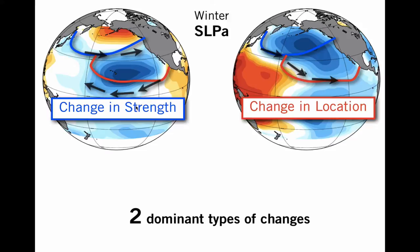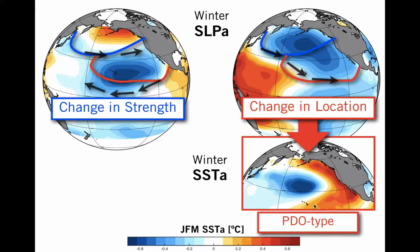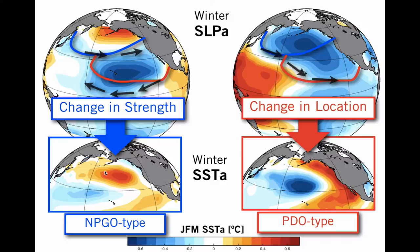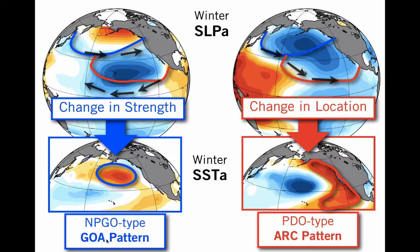In particular, the change in location typically drives the so-called PDO, or Pacific Decadal Oscillation type pattern, which is shown here in sea surface temperature anomalies. The change in strength typically drives a pattern more reminiscent of the North Pacific Gyre Oscillation, shown here. These two patterns have also been referred to in the literature as the GOA, or Gulf of Alaska pattern, and the PDO is also referred to as the arc pattern, because it kind of hugs the coast in an arc-like pattern.